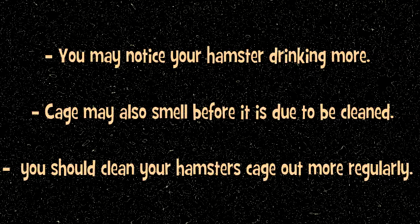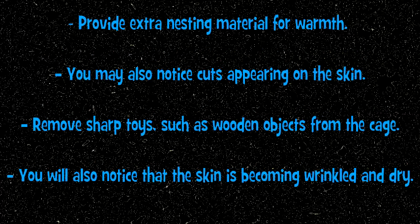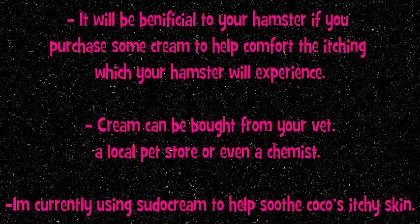As the cage begins to smell more, you should clean it out more regularly. By this point, you may also notice your hamster looking smaller and thinner. Provide extra nesting material for warmth. You may notice cuts appearing on the skin, so remove sharp toys such as wooden objects as the exposed skin is delicate and vulnerable. The hamster will develop wounds and scabs, and the skin will become wrinkled and dry.